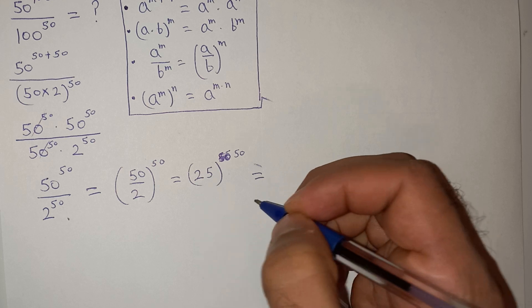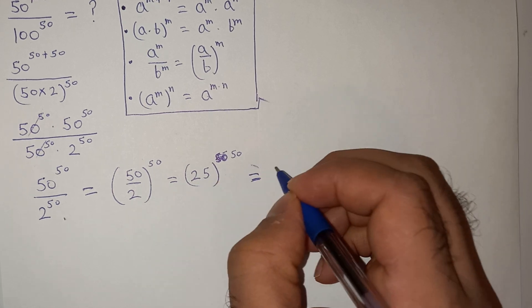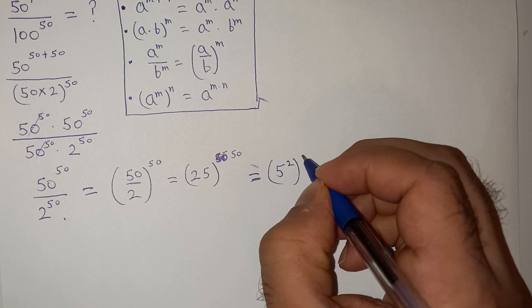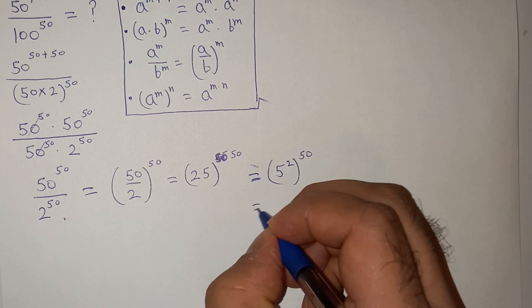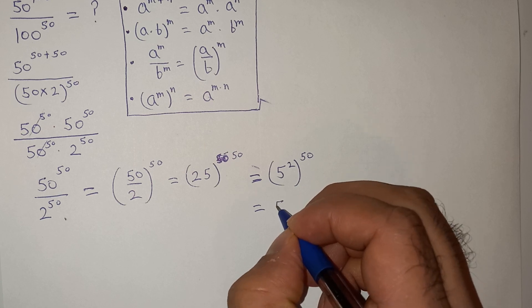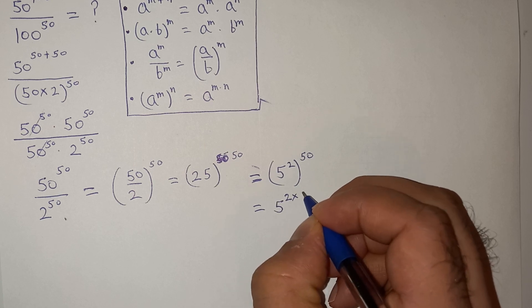So now 25 can be written as 5 square power 50. So further we can write this as 5 to the power of 2 times 50.